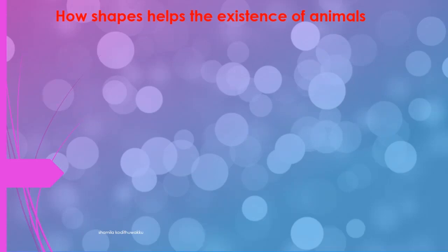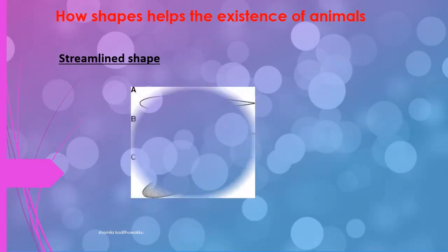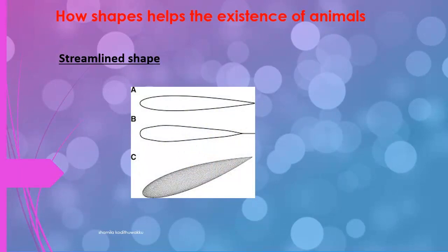How do shapes help the existence of animals? Under that, we discuss streamline shapes. A streamline shape is one where two ends are pointed. This shape is called a streamline shape.